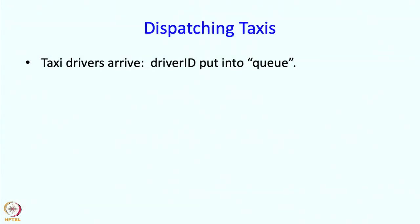In this problem you are at some taxi terminal where taxi drivers arrive and wait for passengers. The idea is that the driver that arrives first must be given a passenger before anyone that comes in later. So we need some kind of a queue, we need to somehow record who came first, who came second, and so on.